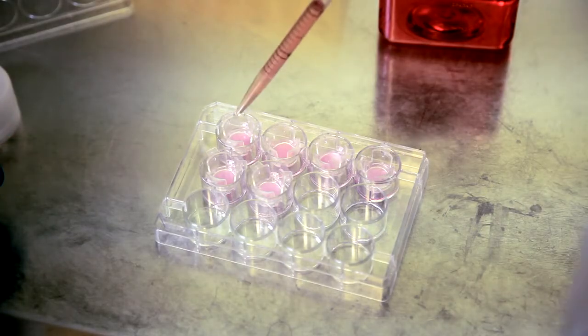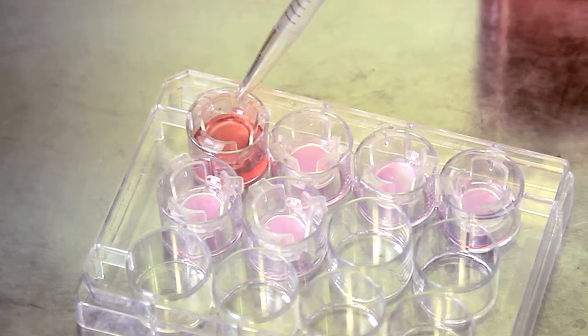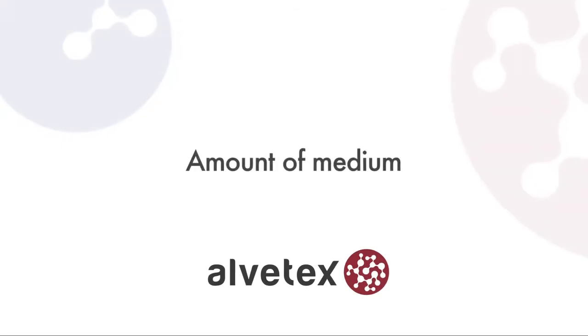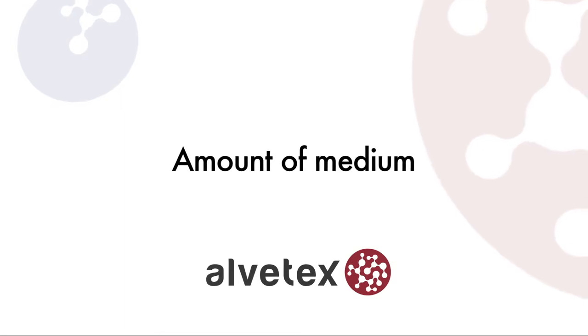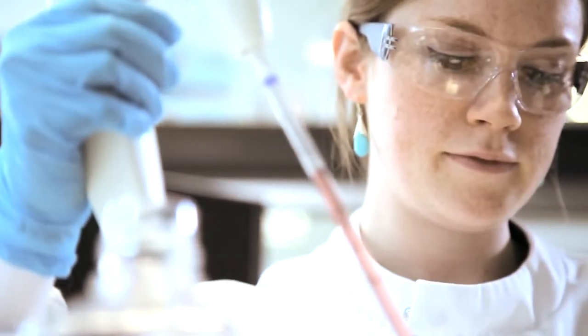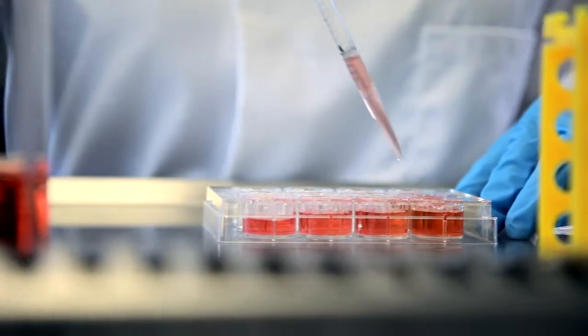After this, gently flood the wells with medium. The amount of medium to use depends on the Alvatex format you've chosen and the purpose of your experiment. If you're using a 12-well plate, then you should use up to 4 milliliters of medium per well.